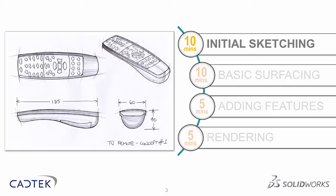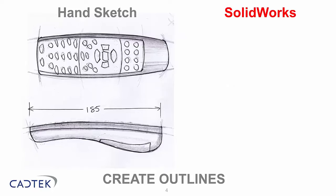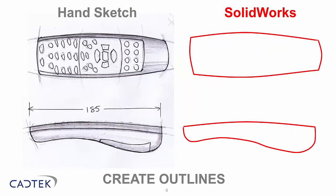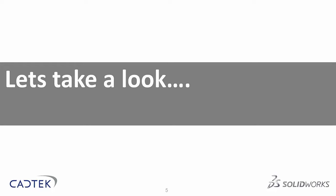The first section is initial sketching. I always start my designs with paper, sketching out what it might look like. On the left you can see a quick sketch of a suggested TV remote control. In SOLIDWORKS I'll take that hand sketch, scan it in, copy it into SOLIDWORKS, pick out the major outlines, and extract them to create some surfacing. Let's take a look at how we create our initial sketches.